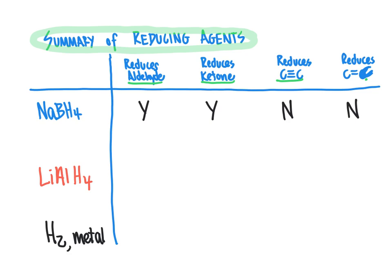Lithium aluminum hydride reacts similarly to sodium borohydride except it's a stronger reducing agent, so you have to protect it from water. It will reduce aldehydes and ketones, but will not reduce carbon-carbon triple bonds or carbon-carbon double bonds — because it uses a nucleophilic hydride that needs an electrophilic atom to attack, and aldehydes and ketones have that electrophilic carbonyl carbon, while C-C double and triple bonds do not. H2 with metal catalyst, on the other hand, is our general worker: it reduces aldehydes, ketones, alkynes, and alkenes.